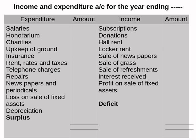On the expenditure side: salaries, honorarium, charities, upkeep of ground, insurance, rent rates and taxes, telephone charges, repairs, newspapers and periodicals, loss on sale of fixed assets, depreciation. On the income side: subscriptions, donations, hall rent, locker rent, sale of newspapers, sale of grass, sale of refreshments, interest received, profit on sale of fixed assets.